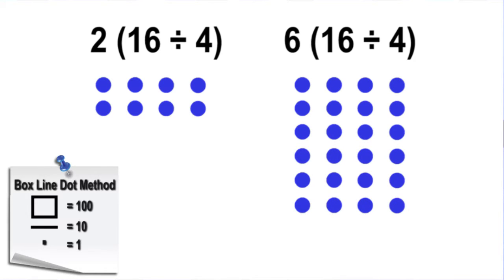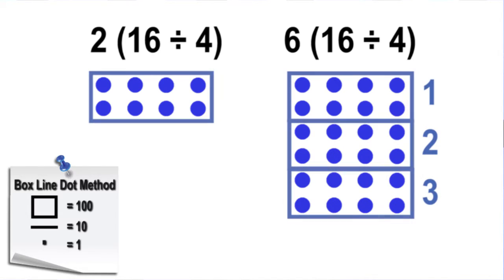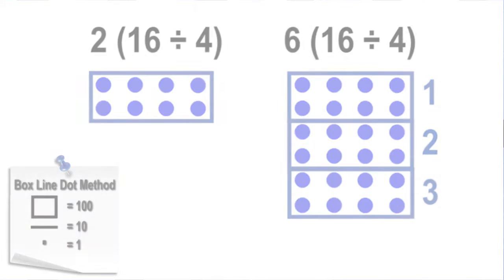The second expression has 3 times as many units as the first expression. Let's compare another set of expressions using the place value blocks.